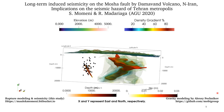Gravity modeling results by Alexey Pechnikov also confirm the existence of a branch of the Damavand magma chamber in this area. Here I am showing the Damavand magma chamber together with the rupture model we obtained and the seismicity along the Mosha fault.